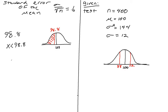So when we do our equation, if you remember setting up the z-score, we have 98.8 minus 100 over our standard error of the mean, which is 0.6. And that is going to give us negative 1.2 over 0.6, which gives us negative 2.